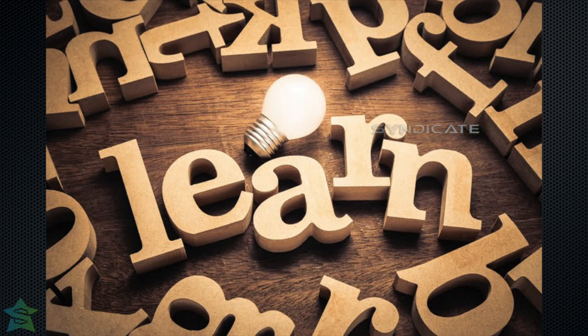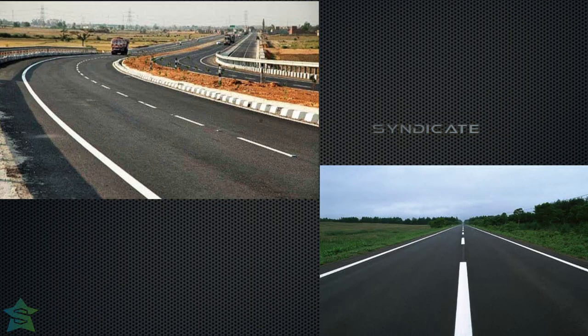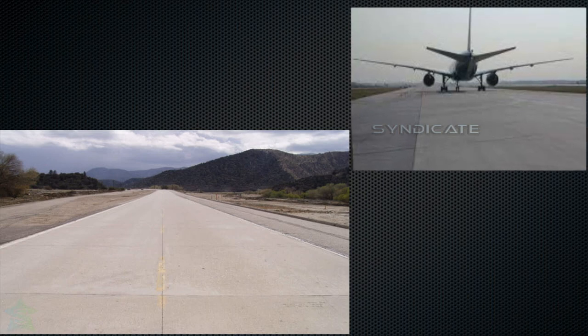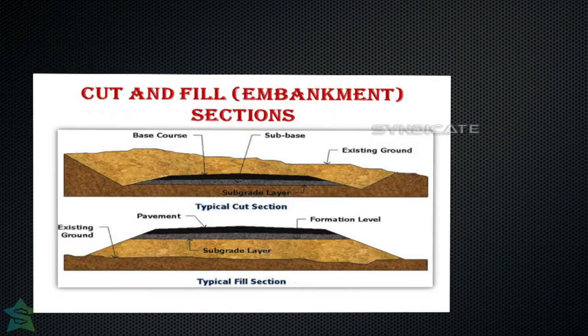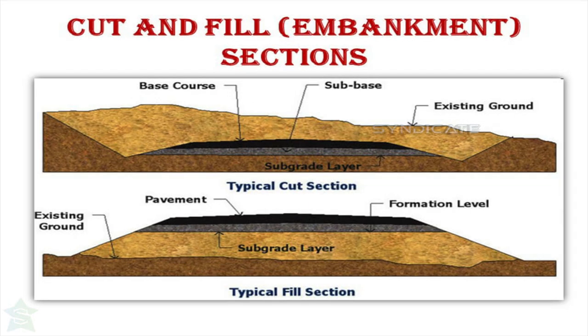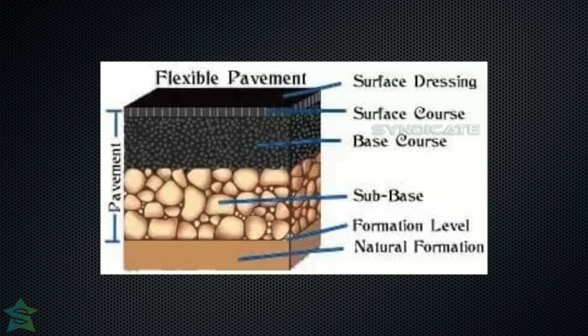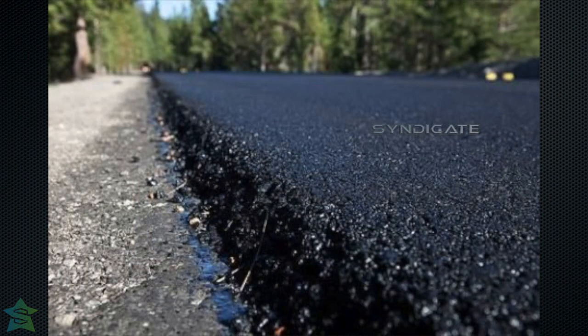Today we are going to see about the types of pavement and an important material used for the construction of flexible pavements. There are different types of pavements, but they are mainly classified as flexible and rigid pavements. Flexible pavements comprise layers such as embankment, compacted subgrade (which denotes the soil), subbase and base course (which are the granular layers), and finally the binder and surface courses, which are the bituminous layers.